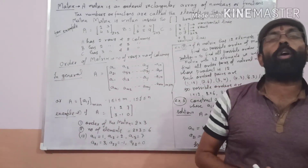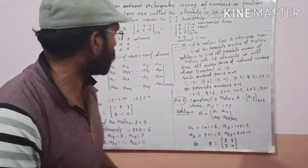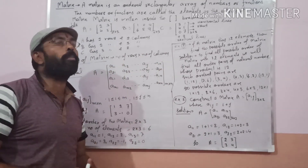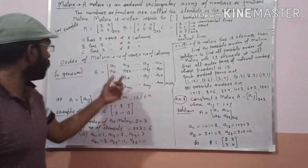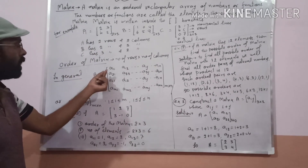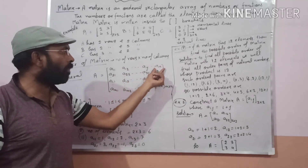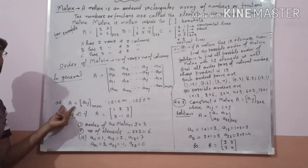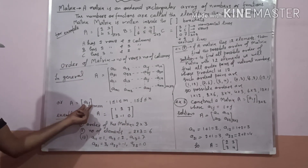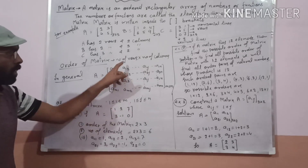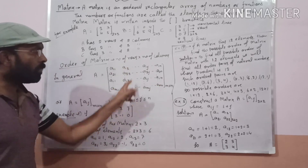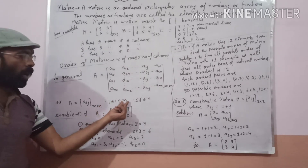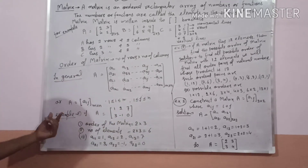Next topic is order of the matrix. The order of a matrix is denoted by number of rows into number of columns. Symbolically, we represent a matrix of order A equal to Aij of order M by N, where i means rows and j means columns. i represents from 1 to M and j represents from 1 to N.